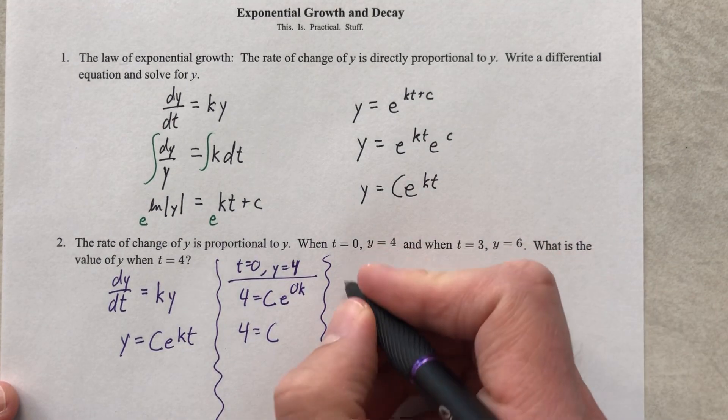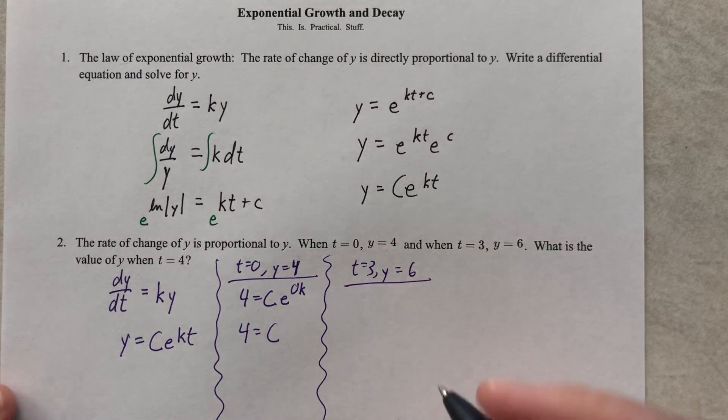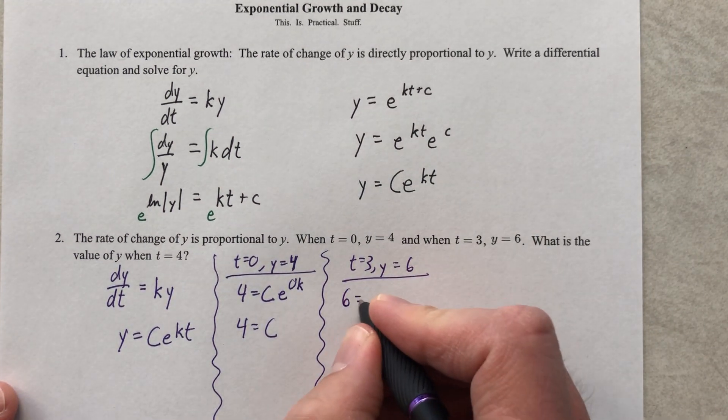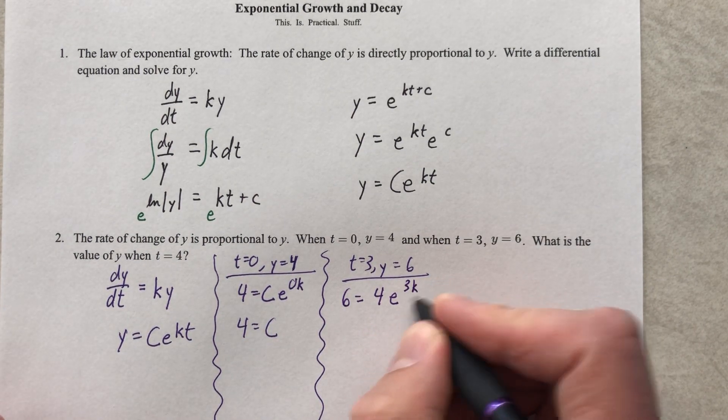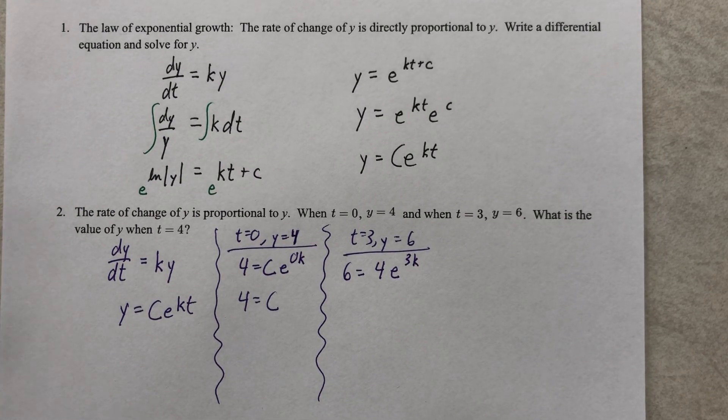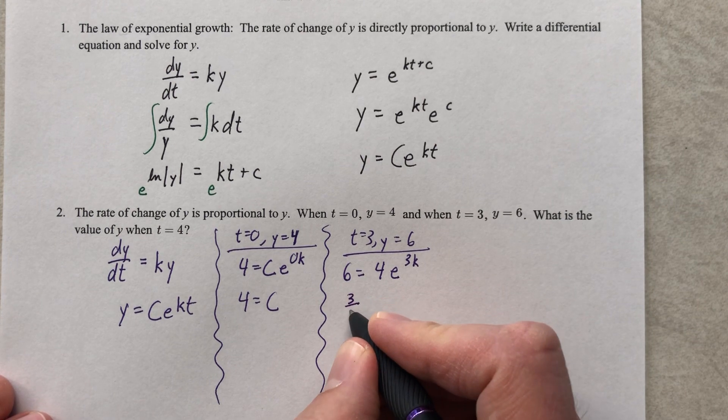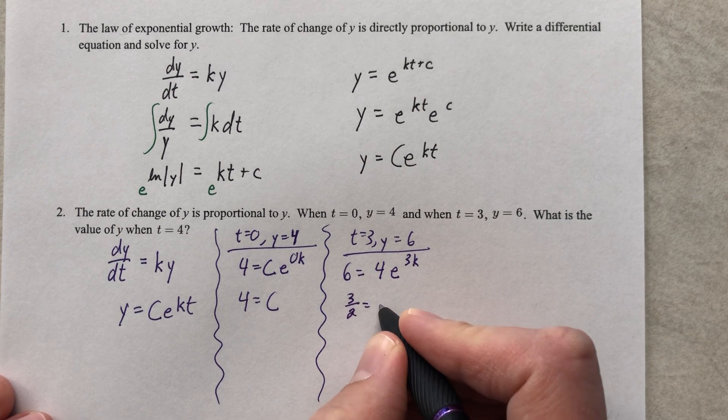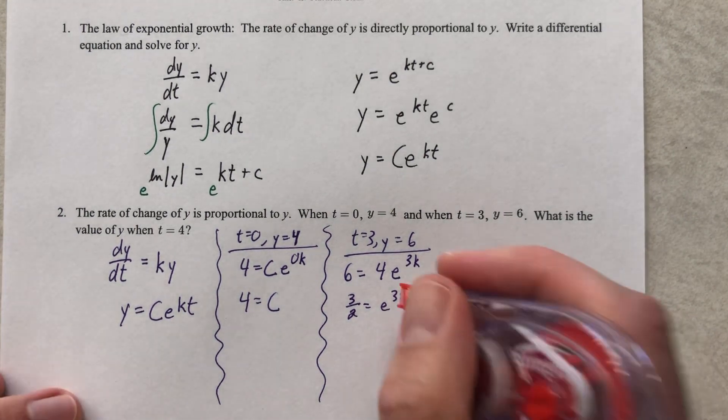When t equals three, y equals six. So t equals three, y equals six. Good to know. So we're going to put a six here, and then a four, and then e to the three k. We're going to keep solving and find out what k is. I will definitely need a calculator for this one.